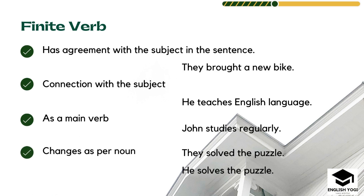Moving ahead, the next type of verb is finite verb. A finite verb is one having agreement with the subject in the sentence. For example: 'They brought a new bike' — 'brought' has a connection with the subject. A finite verb has a strong connection with the subject and works as the main verb in the sentence. For example: 'John studies regularly' — 'studies' is the main verb.